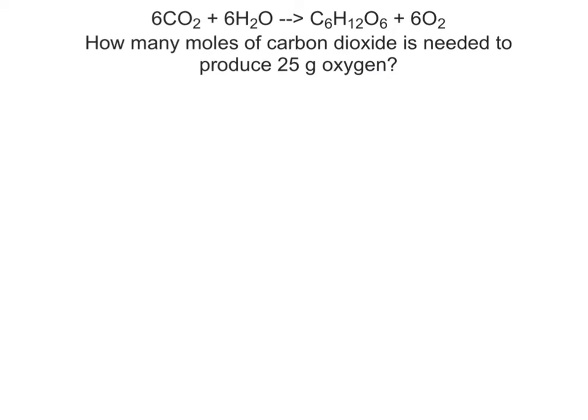Using the same balanced equation, now we're trying to determine how many moles of carbon dioxide is needed to produce 25 grams of oxygen. My unknown is moles of carbon dioxide, so I start with how many moles of CO2 equals my given, which is 25 grams of oxygen. I put what I'm given over 1, and I want grams of oxygen to cancel, so I know it has to go on the bottom of my next fraction.